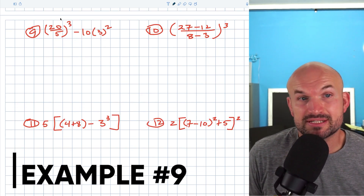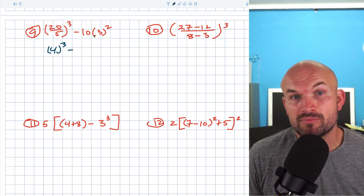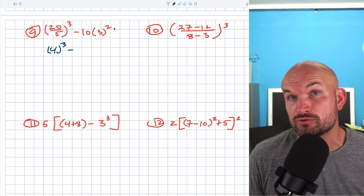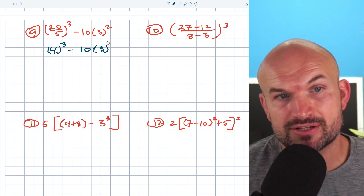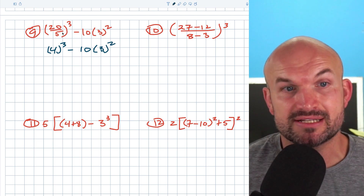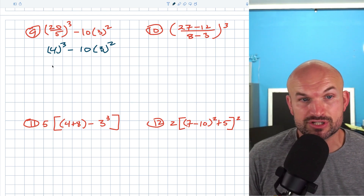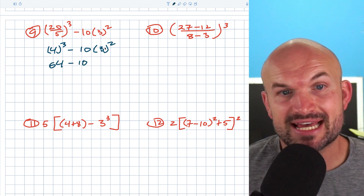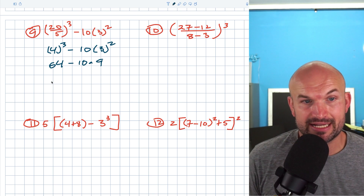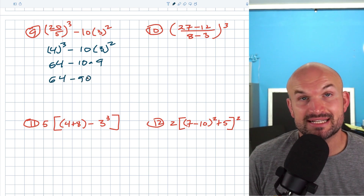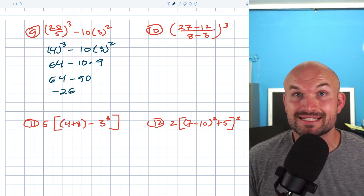In this example, we have parentheses with 22 divided by 5 giving four, cubed, then we subtract 10 times three squared. Be careful — we don't want to multiply 10 times three first; we have three squared, so apply the power first. Four cubed is 64, and three squared is nine, so 10 times nine is 90. Therefore 64 minus 90 equals negative 26.